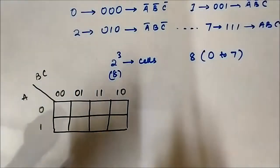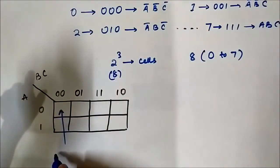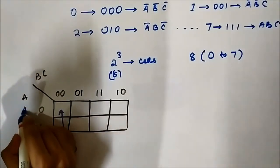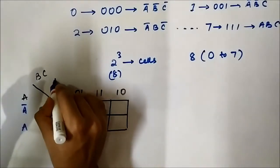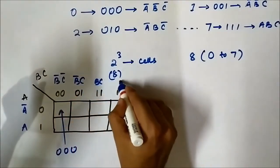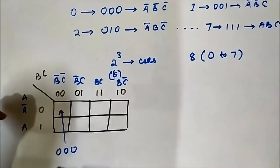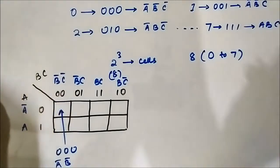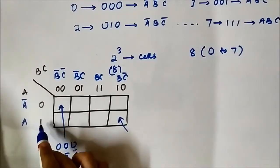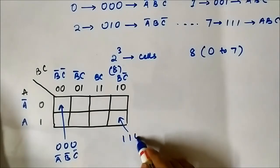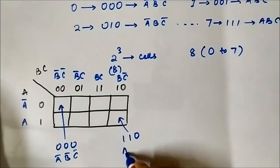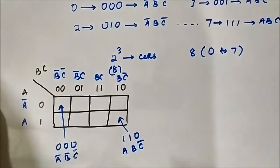For example, the first cell is 0,0,0 — so here A bar is 0, A is 1; this is B bar, C bar; this is B bar, C; this is BC; and this is BC bar. So it stands for A bar, B bar, C bar. Another cell stands for 1,1,0 — where 1 is the horizontal component and 1,0 is the vertical component — so it corresponds to A, B, C bar. This is SOP, so each complemented variable is 0 and each uncomplemented variable is 1.